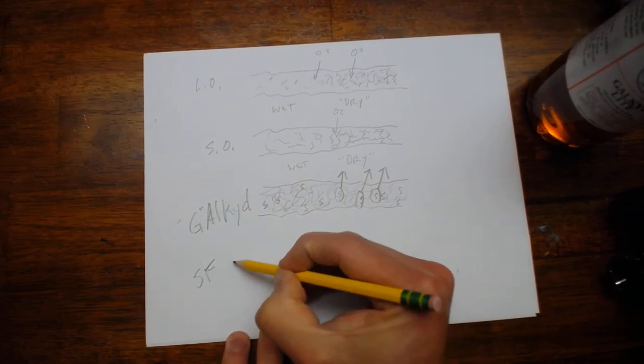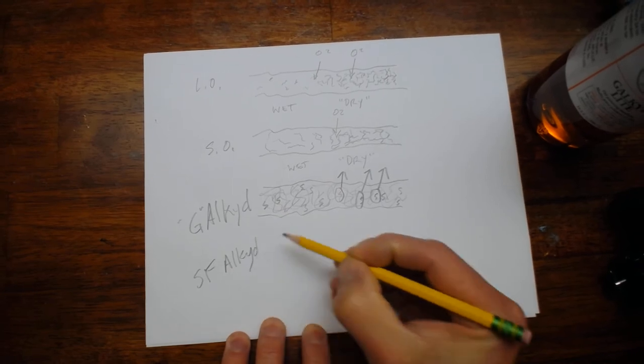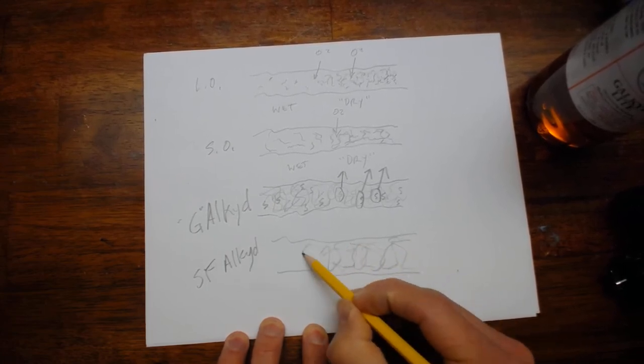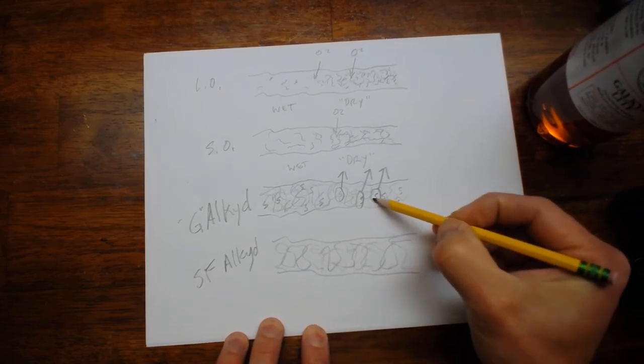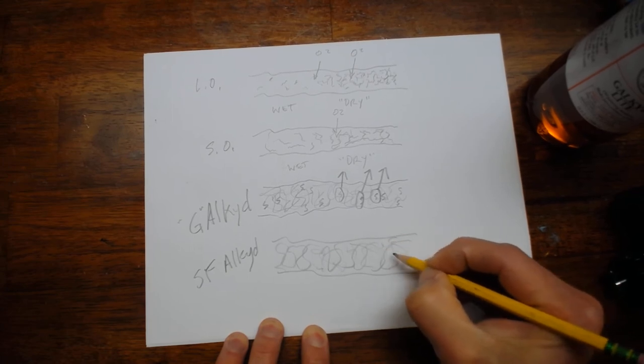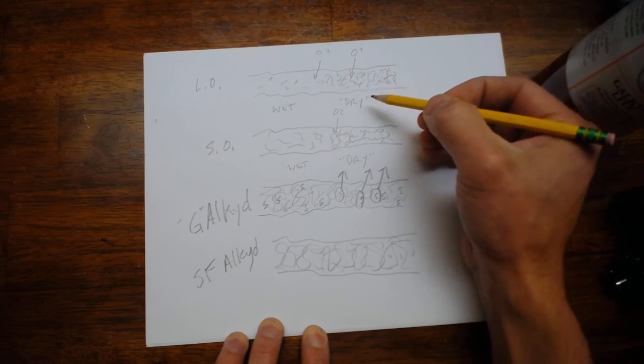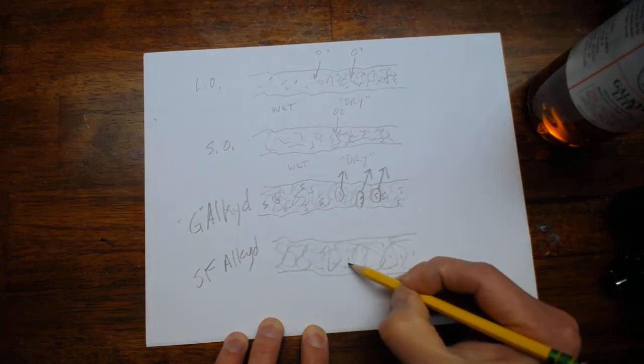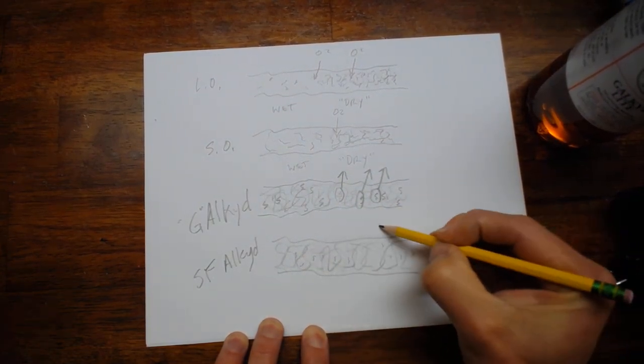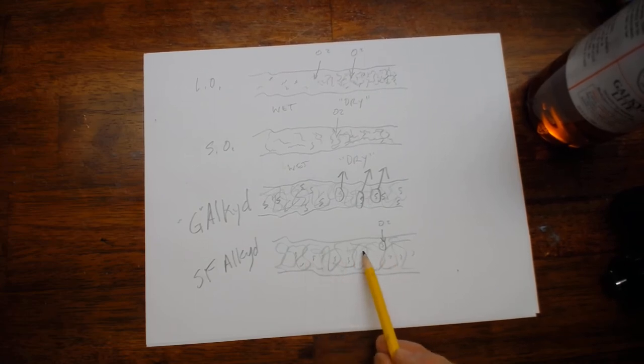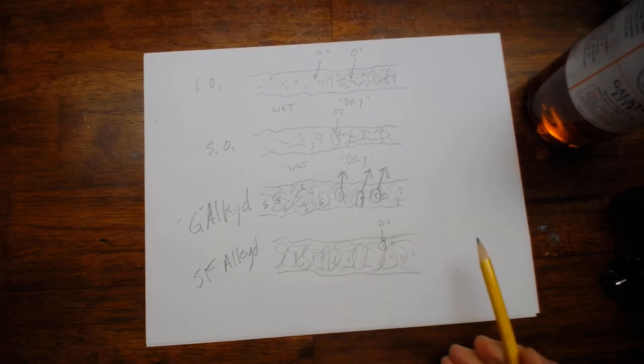Solvent-free alkyd mediums are similar. They start with that soy oil that's highly polymerized. So instead of having a solvent included in it, there is a small amount of a drying oil like walnut oil, safflower oil, basically any type of drying oil can be added to this. And it dries by the oxidation of that oil. So most of the oil in the solvent-free alkyd mediums are already polymerized. And then the drying is completed through the oxidation of their drying oil content.